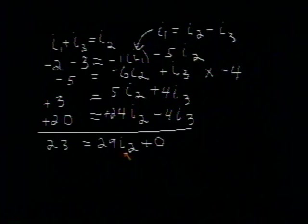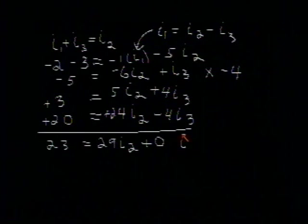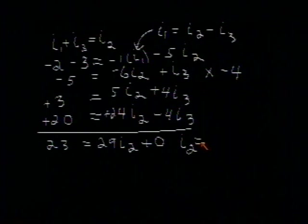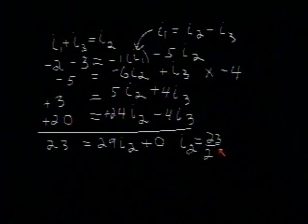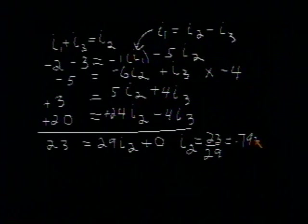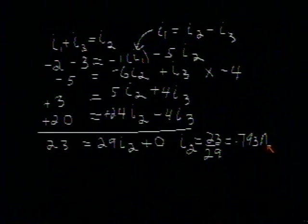We have one equation and one unknown. We solve that for I2. And we get that I2 is 23 divided by 29, which turns out to be 0.793 amperes. That gets us one of our currents.